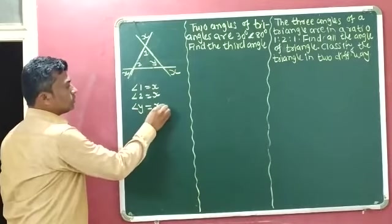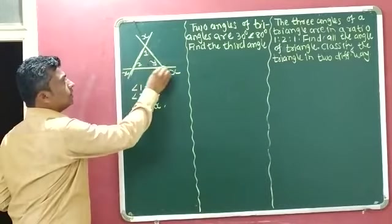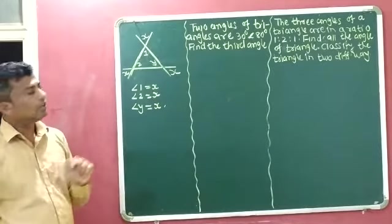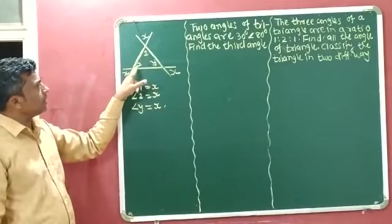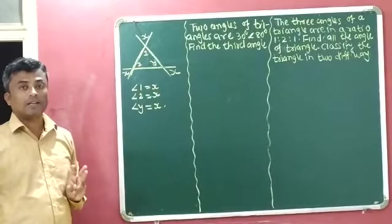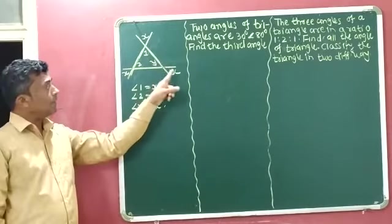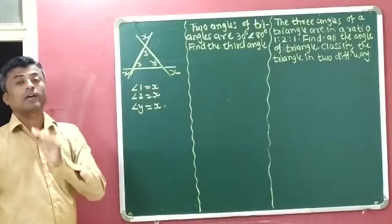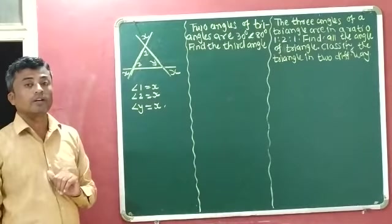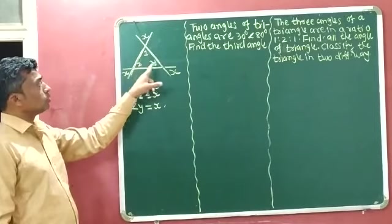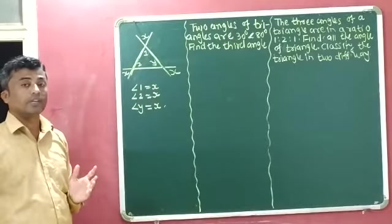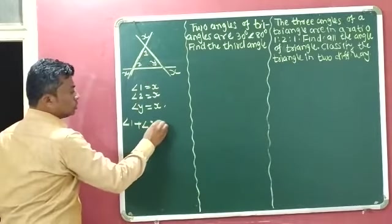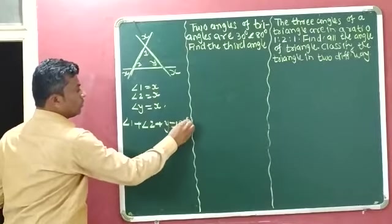So angle y is equal to x. Now, this is the triangle and we have to identify the value of x and y. The three angles of the triangle are angle 1, angle 2, and angle y. We can identify the value of x and y according to the angle sum property. The sum of measures of all the angles of a triangle is always 180 degrees.